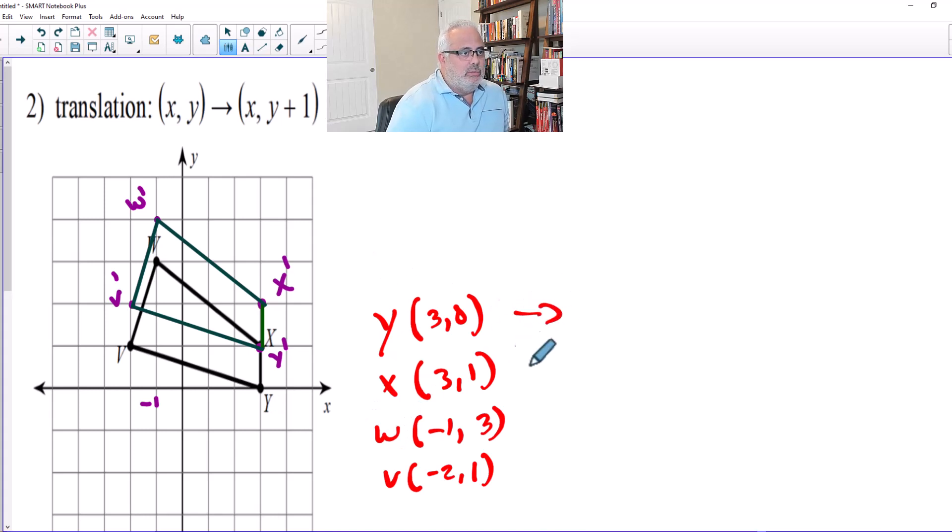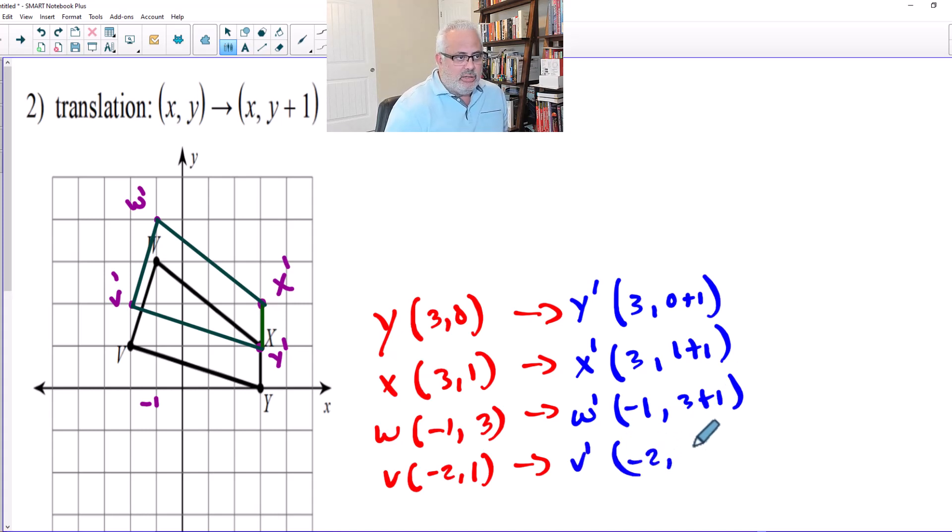When you make a translation based on that rule, y-prime will become: the x stays the same and is 0 plus 1. The x-prime: the x stays the same and is 1 plus 1. W-prime: the x stays the same and is 3 plus 1, because it's y plus one. And v-prime is -2, the x stays the same and is 1 plus 1. So this is the final coordinates of the image.